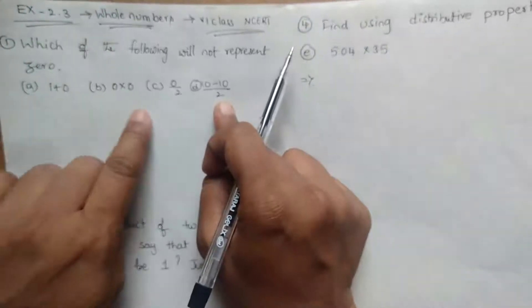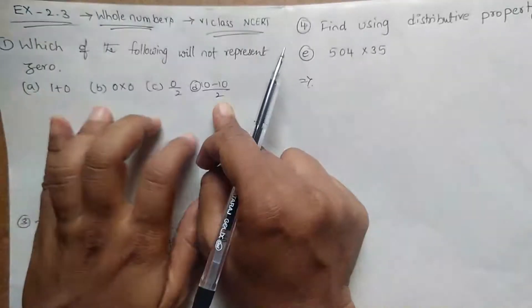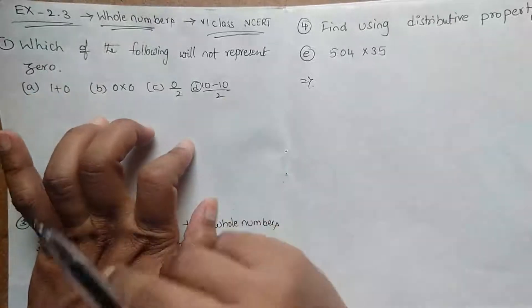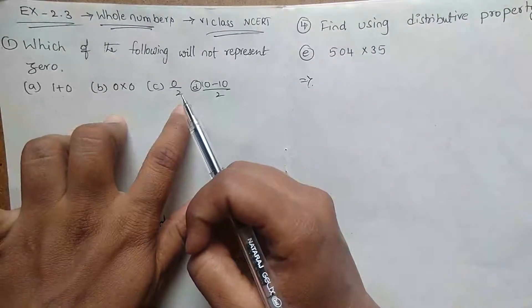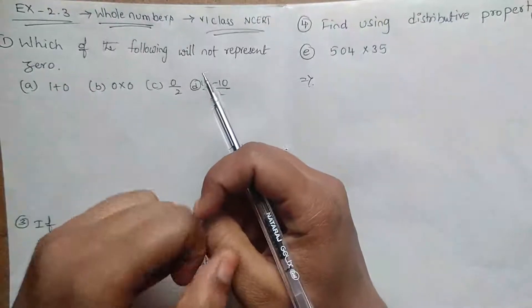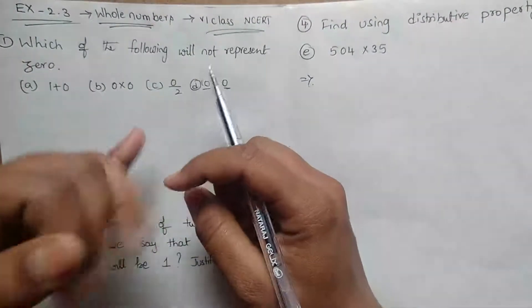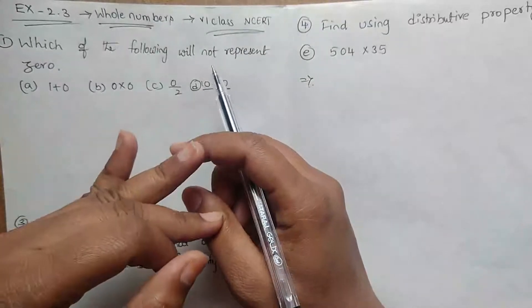Which is not representing zero, we have to find it. So I already told you in previous videos, zero is multiplied and divided by any number, it comes zero. If zero is added and subtracted with any number, it cannot change.